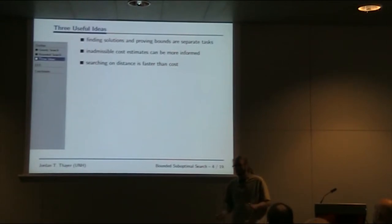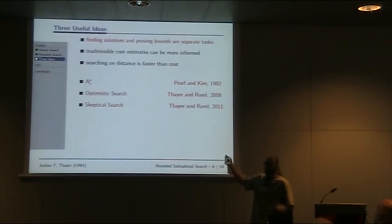There are three really big ideas I'm going to go through. I want to make sure everyone hears them upfront so if you lose the thread, you've at least heard this. The first is that in bounded suboptimal search, finding solutions and proving those solutions are within the bound are really separate tasks. We're not the first to notice this. Pearl and Kim in the 80s proposed A-star epsilon that took advantage of this division of labor.